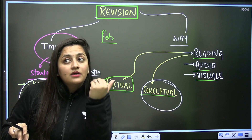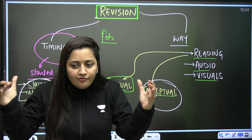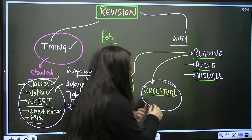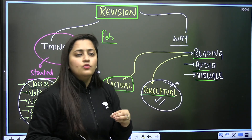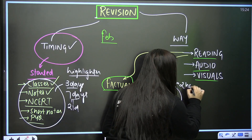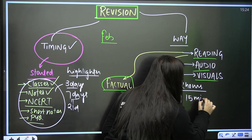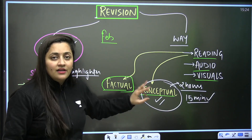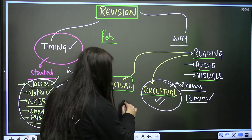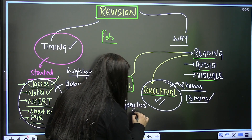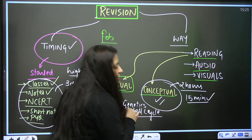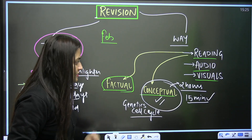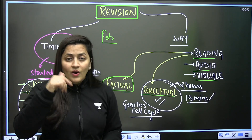For conceptual topics, you have to understand the concept and give it a certain amount of time. But once you understand it, the next revision can take as little as 15 minutes — even if the first time took two hours. That's how conceptual topics help. For example, genetics, cell cycle, and cell division — if your concepts are clear, you won't take much time for revision. The same applies to physics and chemistry.